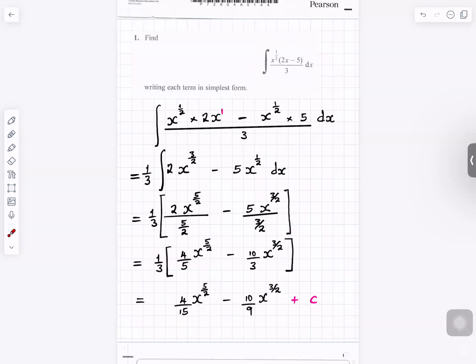So you remove the bracket: x to the power half times 2x and x to the power half times 5. X to the half times x to the power 1, half plus 1, it gives you 3 over 2.